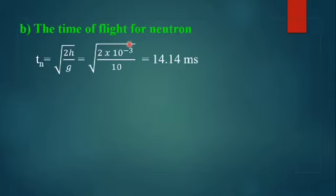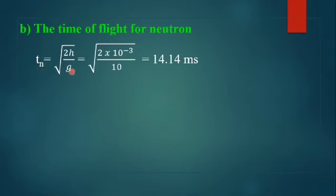Now suppose the neutron is allowed to fall through the same conditions. The time of flight for the neutron — the neutron is a chargeless particle, so there is no electric force acting on it. Therefore the time of flight for the neutron is simply the square root of 2h divided by g. Substituting the values gives 14.14 milliseconds.